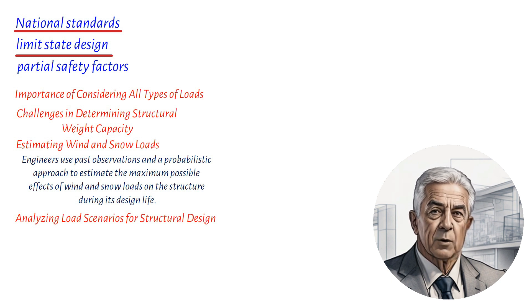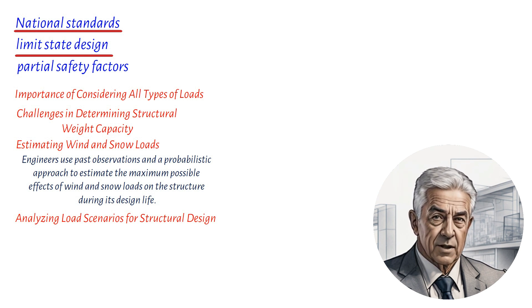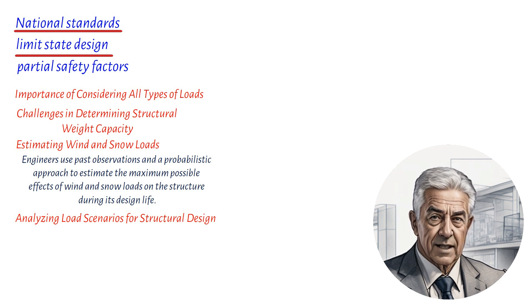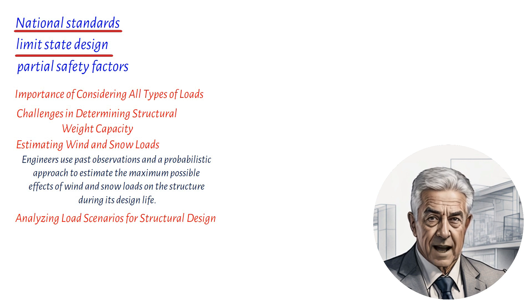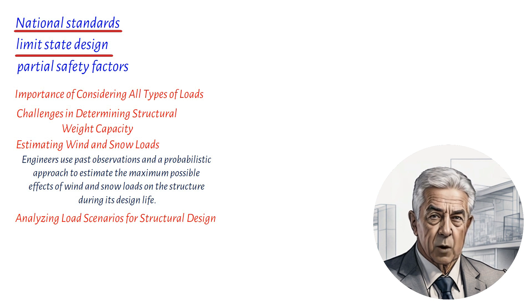You might be wondering how these safety factors are determined. Well, different partial safety factors can be applied depending on the uncertainty or variability of a particular type of load. For example, loads caused by wind may have a different safety factor than loads caused by people walking on a floor.